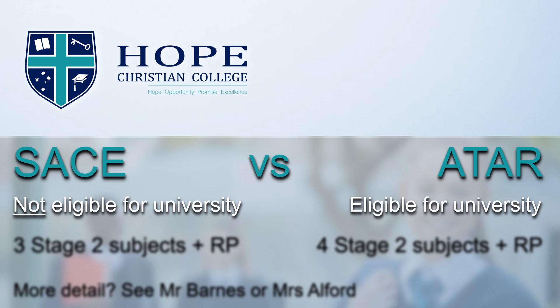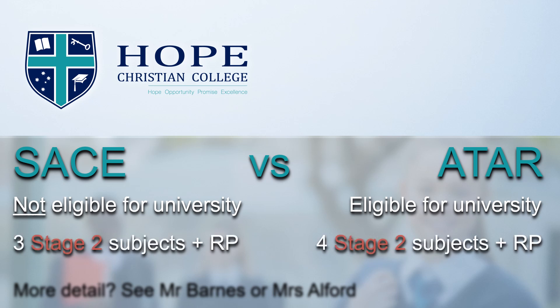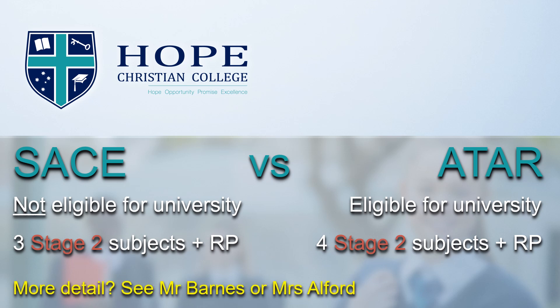Completing the SACE alone does not make you eligible to go to university — you need an ATAR as well. Another difference is that to earn the SACE you must generally complete three subjects plus the Research Project in Year 12 Stage 2, but to gain an ATAR you must complete four subjects plus the Research Project. Mr. Lungley or Mrs. Alford or I can explain this in more detail if you'd like.